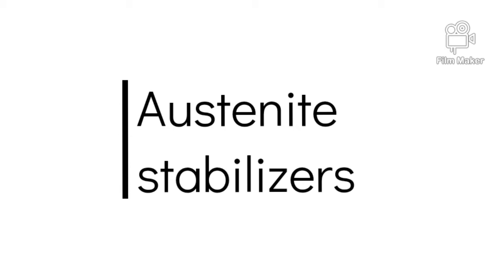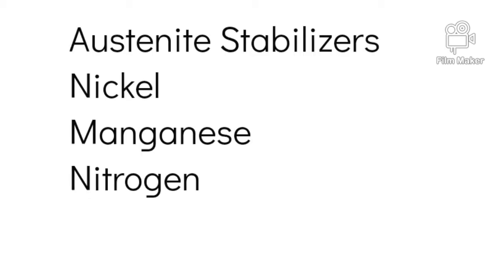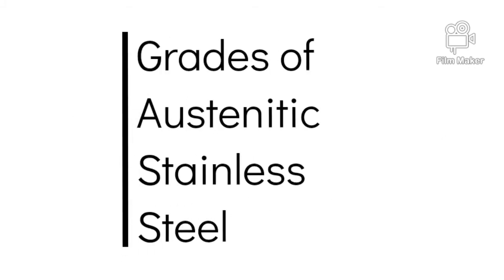The function of these elements is to increase the austenite field so that it is stable even at room temperature. These austenite stabilizers include nickel, manganese, and nitrogen. On the basis of the stabilizers added, austenitic stainless steel can be divided into two series.